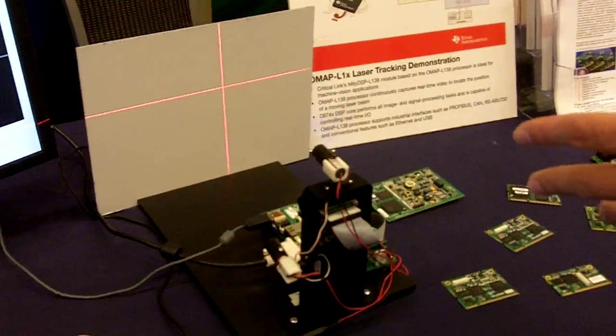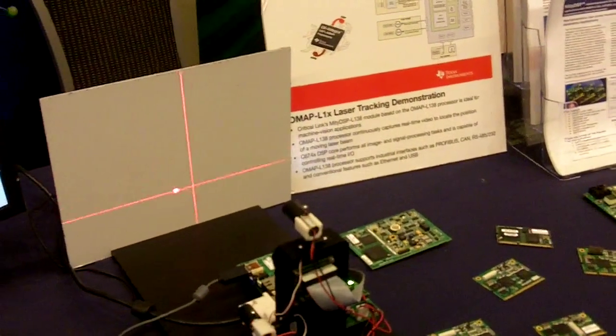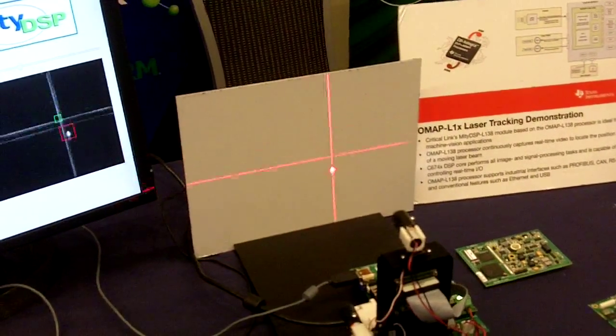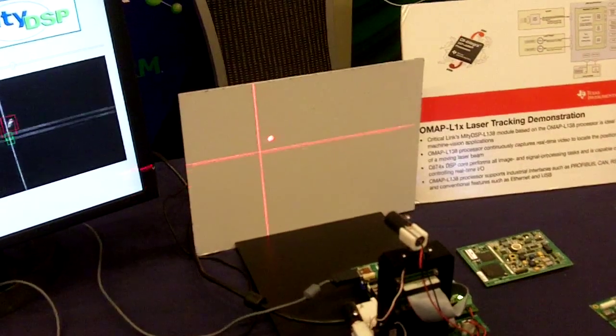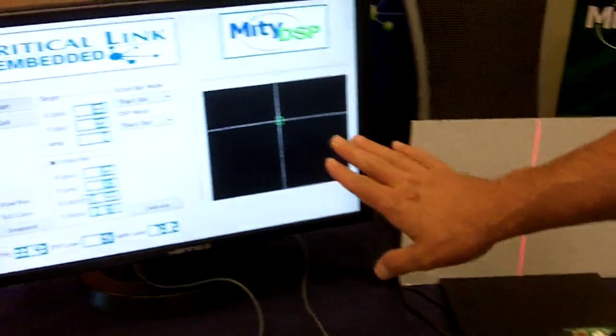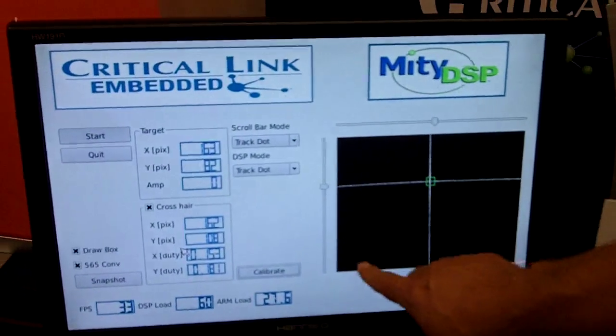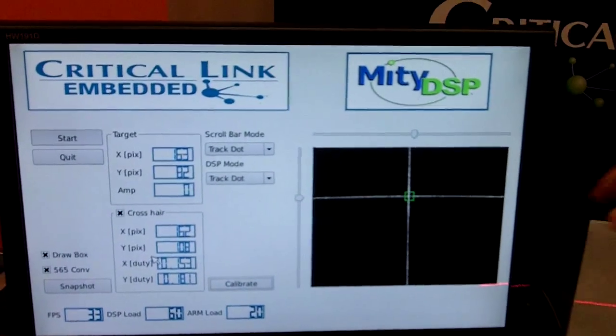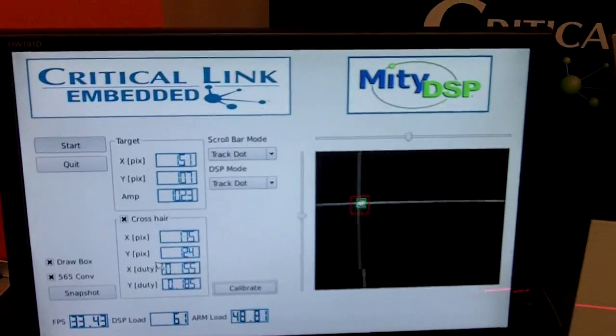The DSP is doing all of the image processing in this demonstration. It is locating the dot, running all the tracking algorithms, doing all of the image analytics. In the display that we have over here, all of this area right here is being generated and displayed by the DSP itself. So all of this work is being done in the DSP.